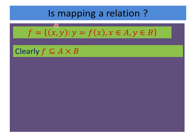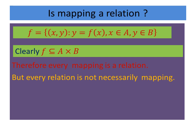Now the question is: is a mapping a relation? The answer is yes — every mapping is a relation, because a relation is a subset of A × B. The video on relations is discussed in a previous video whose link is in the description box. Now the converse question: is every relation a mapping? The answer is no — every relation is not necessarily a mapping.